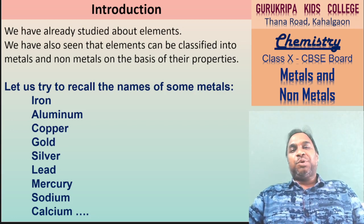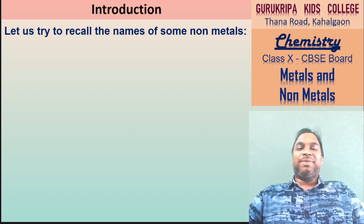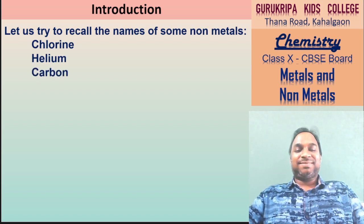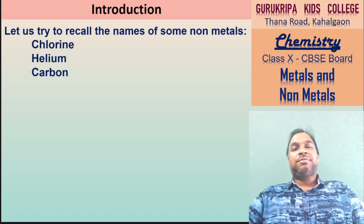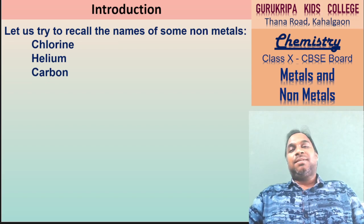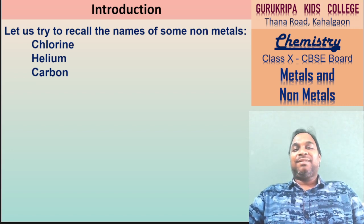तो मैं सारे names इसलिए बता रहा था - पहले names देख लेते हैं, उसके बाद बात करते हैं. Non-metals कौन से हैं? कौन सा नाम याद है? पिछले chapter में Chlorine मिला था. Helium पहले सुना होगा. Carbon. और Iodine - यह सारे non-metals होते हैं. Generally इतने आराम से मिलते भी नहीं, lab में ही मिलते हैं. Nature में non-metals होते भी कम हैं, इसलिए ज़्यादा नहीं पता है.